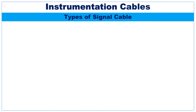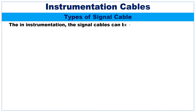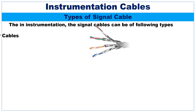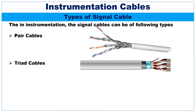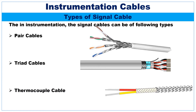The types of signal cables used in instrumentation are: pair cables, triad cables, and thermocouple cables.